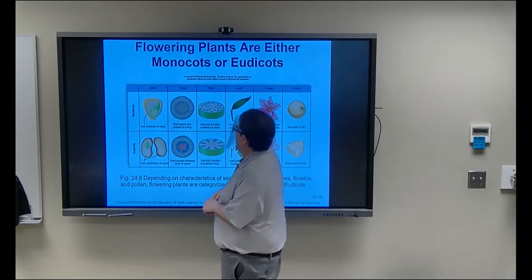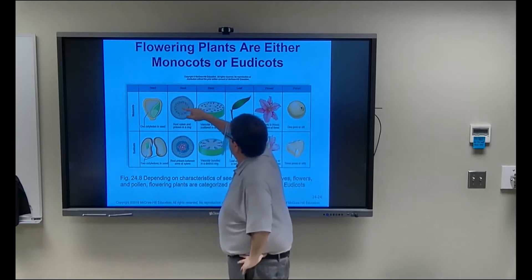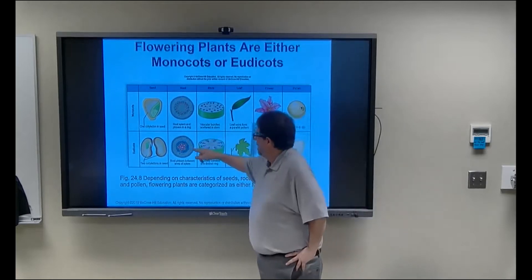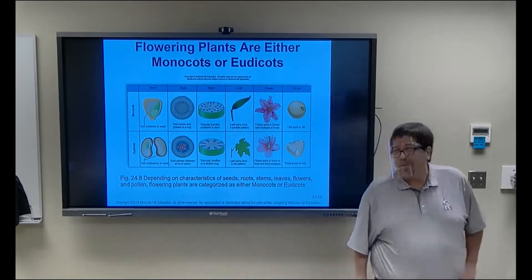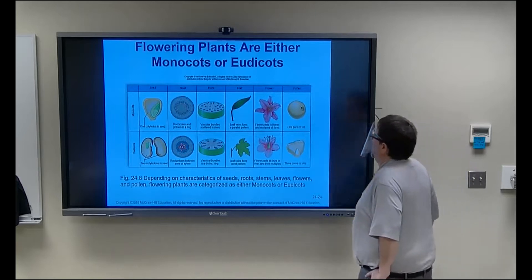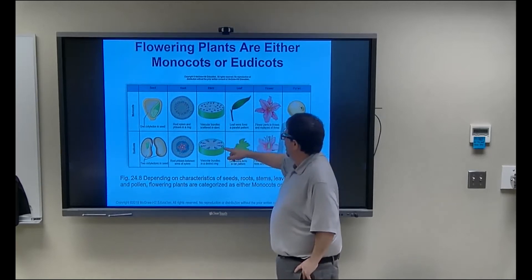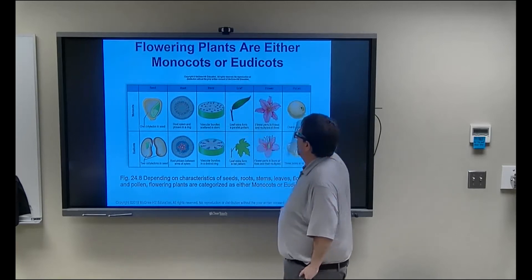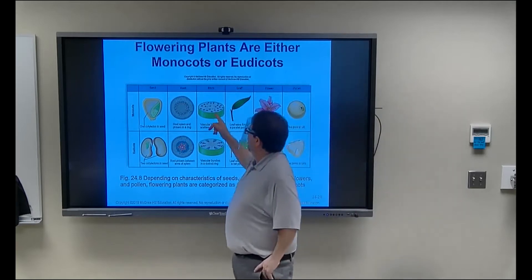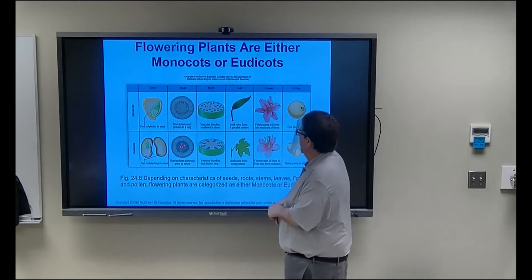In monocot roots, the xylem units form a ring. Dicot roots have a star pattern in the middle with xylem on the outside and phloem inside. When you cut a dicot stem you get a ring of vascular bundles with xylem and phloem; in monocots you get a random assortment of vascular bundles scattered throughout. One of the monocot vascular bundle cross-sections actually looks like a monkey face with two eyes and a big mouth — that's one way I remember it.